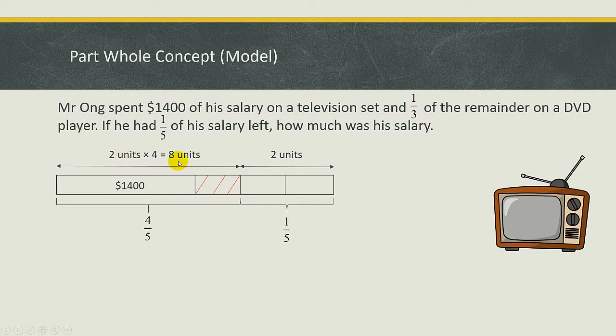Okay, and now from here to here we know that's eight units. Okay, and over here is one unit. So over here must be how many units. Yes, it's seven units. Okay, so seven units is equals to $1,400. Okay, the rest will be pretty straightforward. So one unit will be $1,400 divided by seven which is $200.